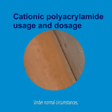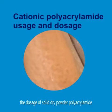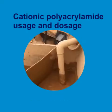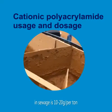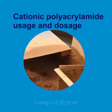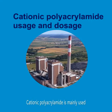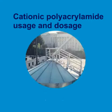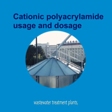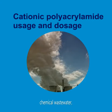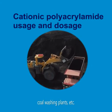Under normal circumstances, the dosage of solid dry powder polyacrylamide in sewage is 10 to 20 grams per ton. Cationic polyacrylamide is mainly used in paper mills, wastewater treatment plants, chemical wastewater, and cold washing plants.